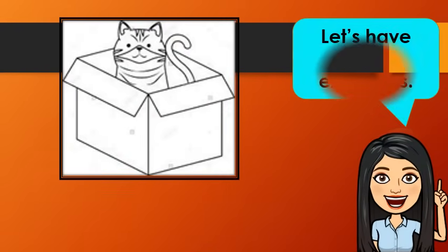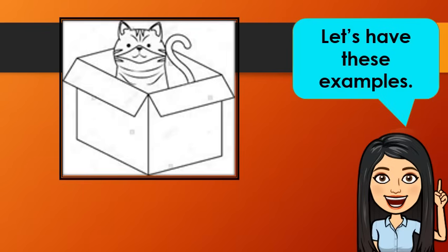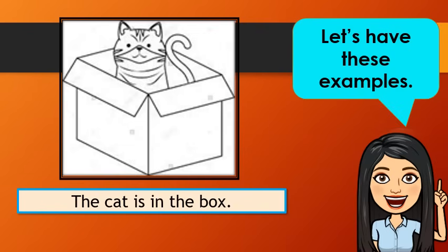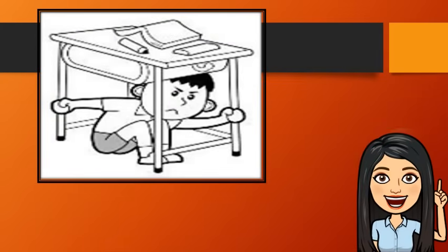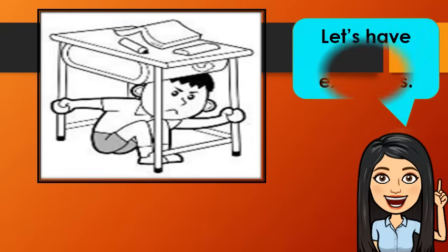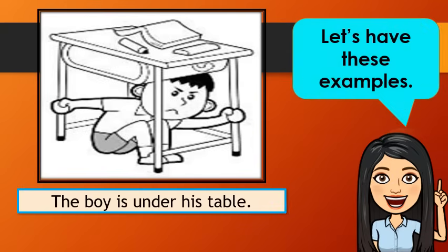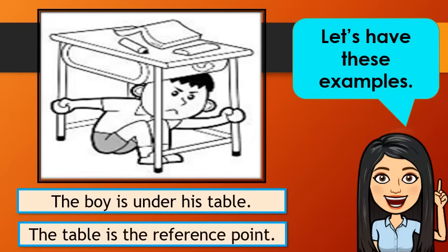Let's have some examples. I want you to look at the picture. Can you tell me the position of the cat? Very good! The cat is in the box. What do you think is the reference point? Good job! The box is the reference point. The boy is under his table. What do you think is the reference point? Very good. The table is the reference point.